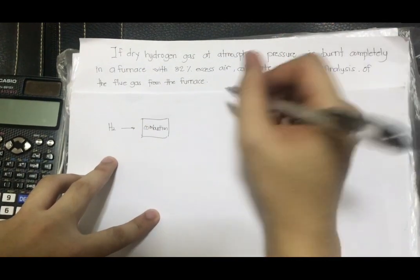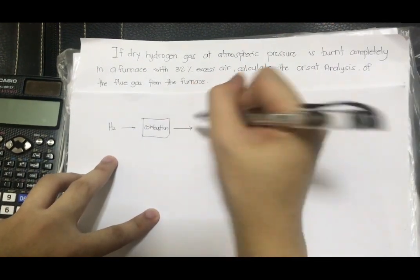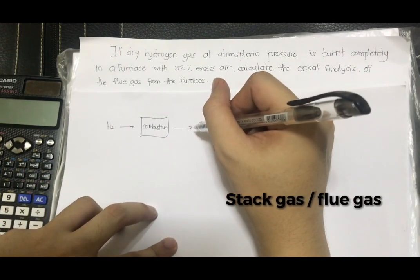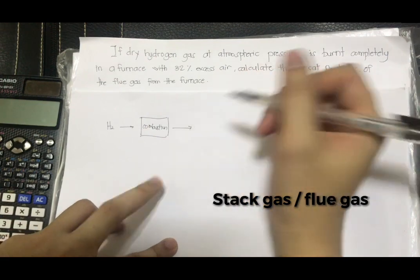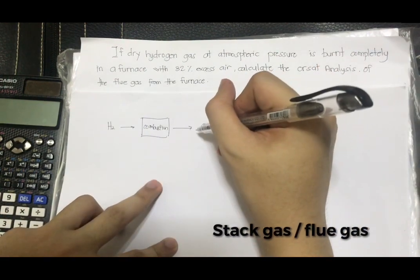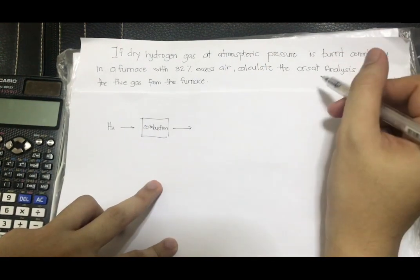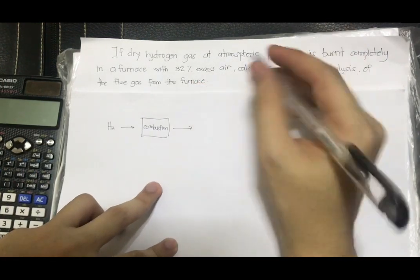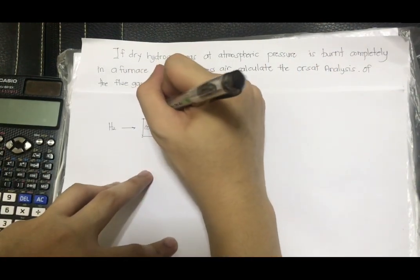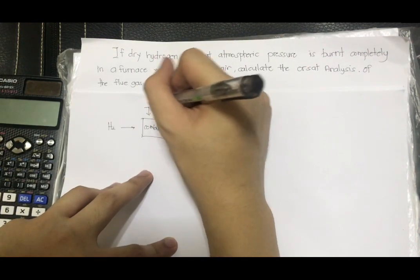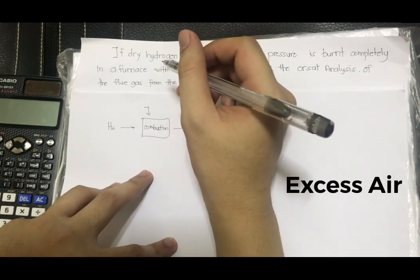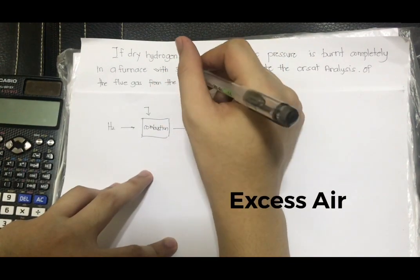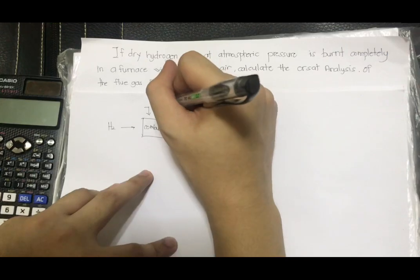Next is the product, or we also call it stack gas or flue gas. So this is what we'll compute now, the Orsat analysis of the flue gas. So leave it blank for now. And then, at the top, here is where the excess air enters. So in the problem, we have 32% excess air.